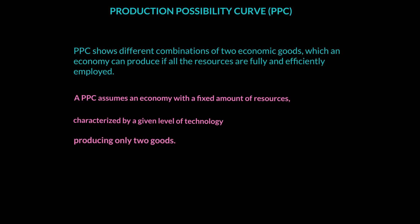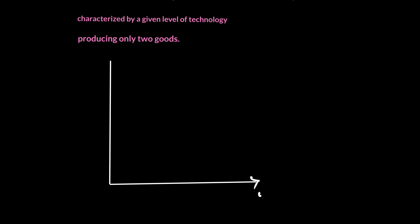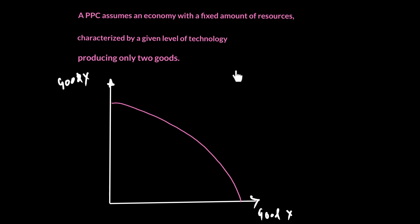Let's now draw the PPC diagram to see how it shows the productive potential of the economy. On the x-axis we put Good X and on the y-axis we put Good Y. The economy is assumed to produce only these two goods, using all resources fully and efficiently. All points on the PPC represent full and efficient employment of resources.